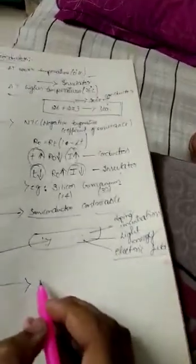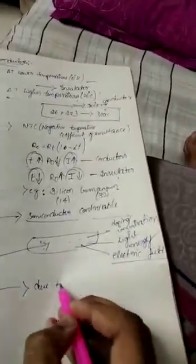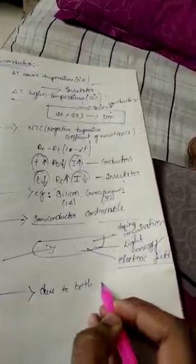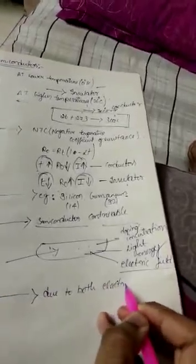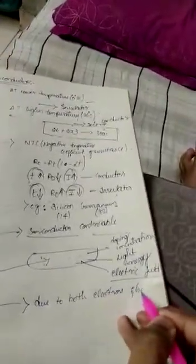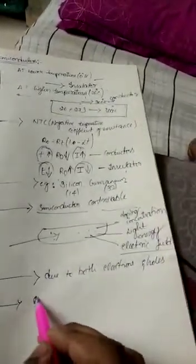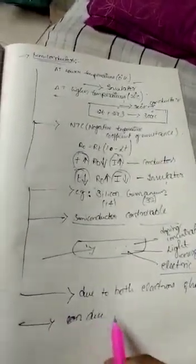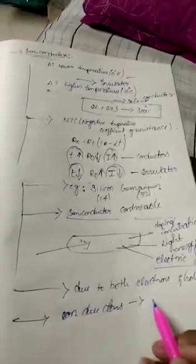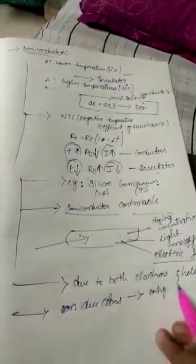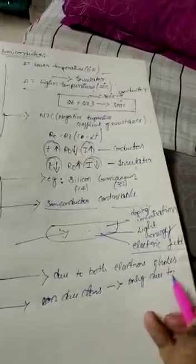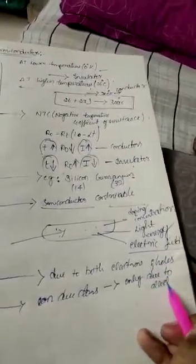Also, in semiconductors, current conduction is due to both electrons and holes. In contrast, in conductors, current conduction is only due to electrons.